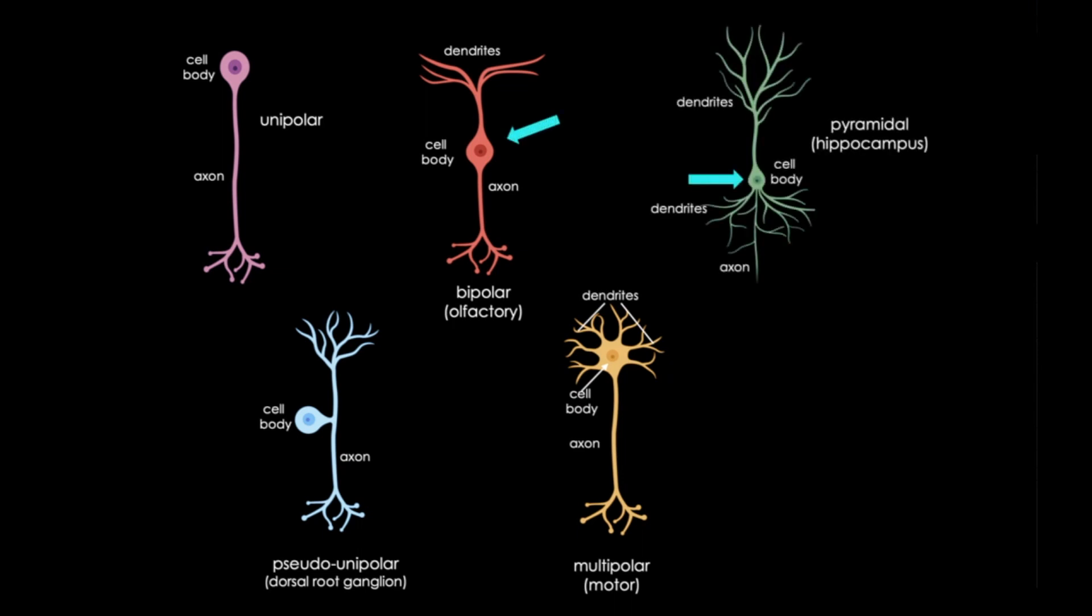The length of the axon can also vary. Again, this reflects function. Neurons with long axons are usually projection neurons that have glutamate as a neurotransmitter, and they are excitatory.